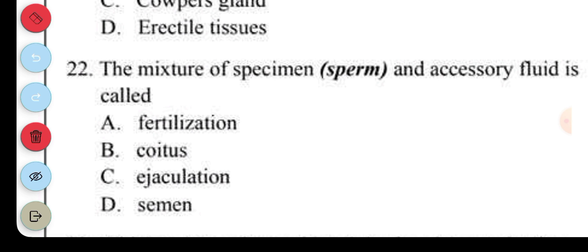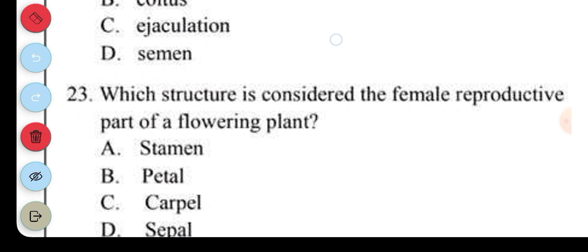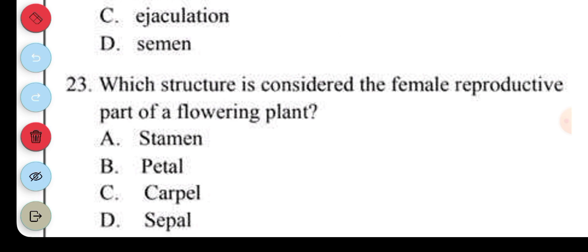Question 22. The mixture of sperm and accessory fluid is called: A. Fertilization. B. Coitus. C. Ejaculation. D. Semen. The answer to question 22 is D, semen. Question 23. Which structure is considered the female reproductive part of a flowering plant? A. Stamen. B. Petal. C. Carpel. D. Sepal. The answer to question 23 is C, carpel.